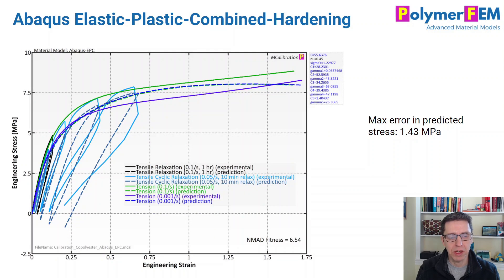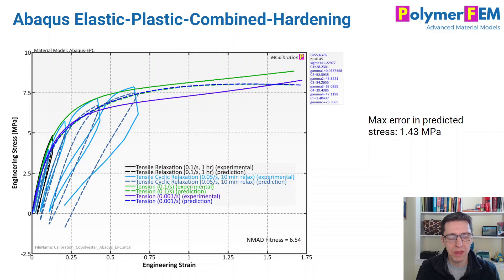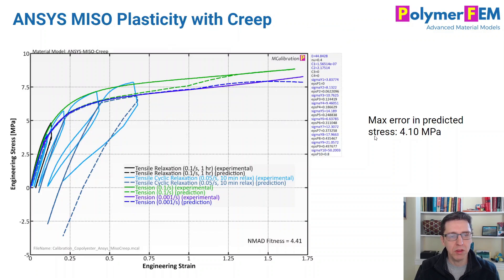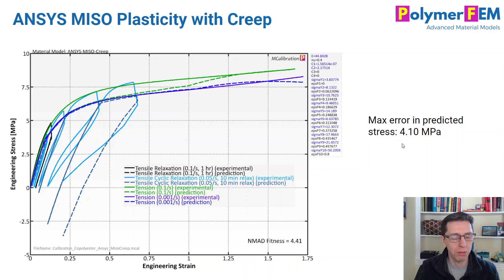How about elastic-plastic combined hardening? This is a multi-back-stress network model — the Abaqus version, with a similar one in ANSYS. The average error is 6% and the max error is 1.43 MPa — actually not too bad, and it was one of the surprises to me. However, there is no rate dependence, which is a problem. How about multi-isotropic linear hardening plasticity with creep? This is a rate-dependent plasticity model in ANSYS. The average error is 4.4%, but the maximum error is 4 MPa — you can get reasonably good average predictions but a terrible maximum error.